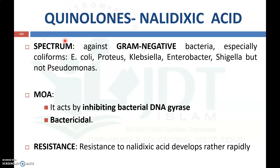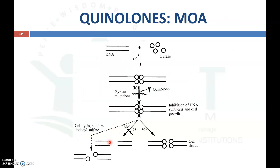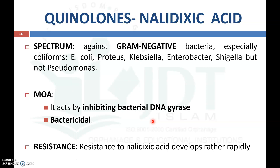The mechanism of action of quinolones involves inhibiting the bacterial DNA gyrase enzyme, producing a bactericidal effect. DNA requires the DNA gyrase enzyme in order to multiply. Due to inhibition of this DNA gyrase, DNA synthesis is inhibited, thereby preventing multiplication of the microorganism and killing it. This is a bactericidal action.